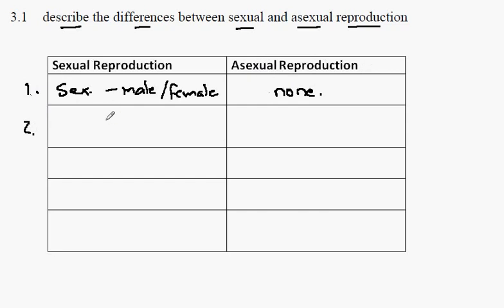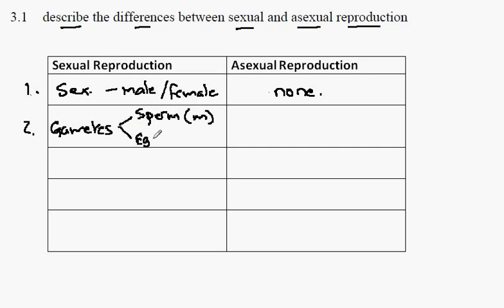Sexually reproducing organisms produce cells called gametes. These take the form in the male of the sperm cell and in the female of the egg cell. In plants, the sperm cell is otherwise known as the pollen grain and the egg as the ovule. Asexually reproducing populations have no gametes.